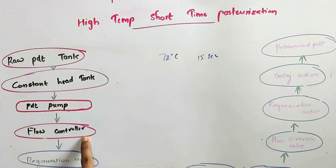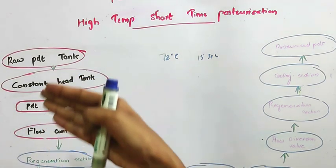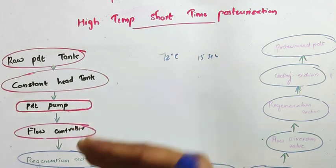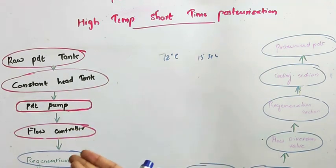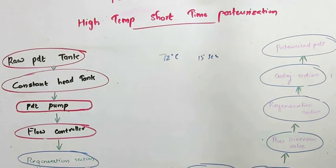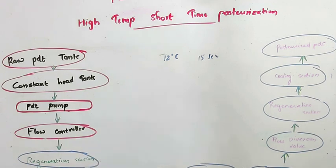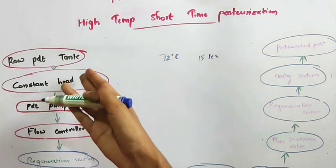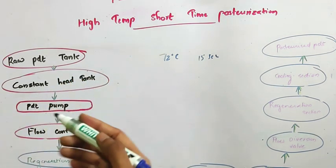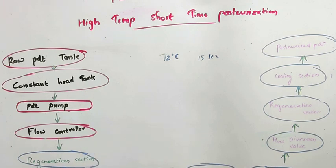The aim of the flow controller is to regulate the flow rate of the product. From the flow controller, the product reaches the regeneration section. The regeneration section is used for heating the product. The milk coming from the raw product tank is at a lower temperature, so we heat it by putting this cold milk in contact with hot milk. This hot milk is the milk pasteurized in the previous batch, which needs to be cooled before packaging. So that hot milk is used to heat the cold milk from the raw product tank — that is what happens in the regeneration section.